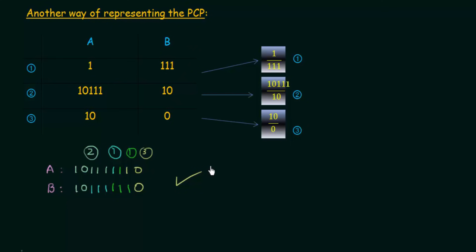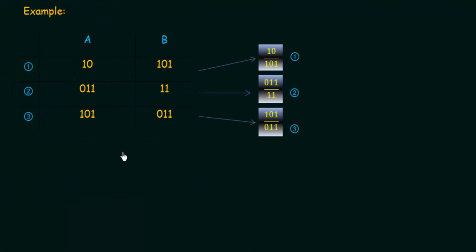I said in the beginning that PCP is undecidable, but in the first two examples we were able to solve it. Why do we say it is undecidable? That will be clear from the next example. Here is another PCP with the same table representation, dominoes 1, 2, and 3. In domino 1 the first symbol on top and bottom are the same, so we must start with domino 1: 10 over 101.